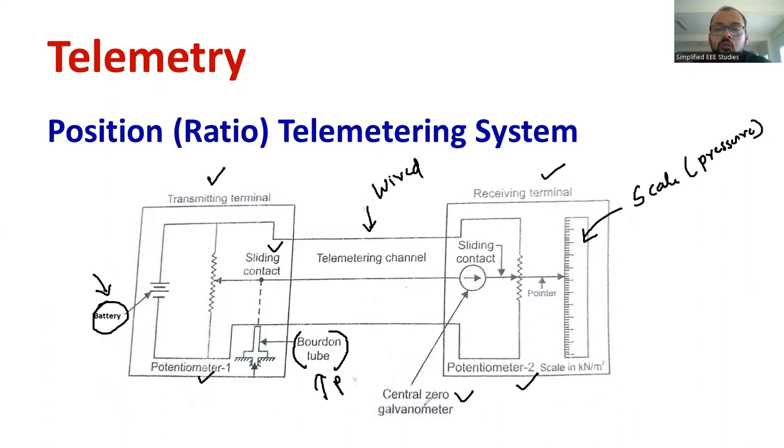Because potentiometer means that related to the voltage, changes in the voltage. So that is directly correlated with the pointer. So, with respect to change in the pressure, the sliding contact at the transmitting end changes. That will be directly correlated with the slider at the receiving end side. With respect to the changes in the position of the slider, you can see the variation in the pointer. Sometimes pointer may go up, sometimes pointer may go down.